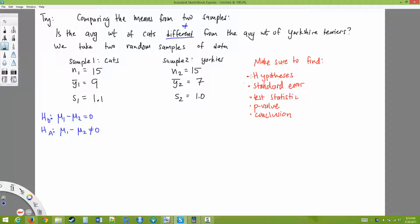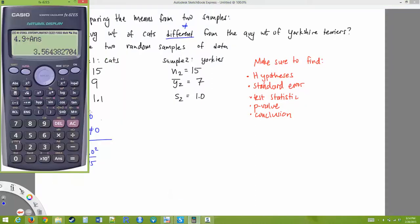All right, so that was the hypothesis. Let's find our standard error so we can find our test statistic. Standard error will be 1.1 squared over 15 plus 1.0 squared over 15. So let's do that. Okay, we got 0.384.